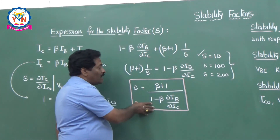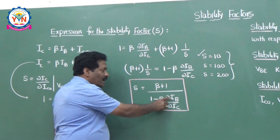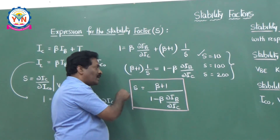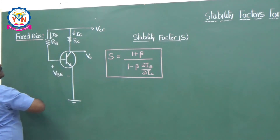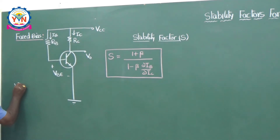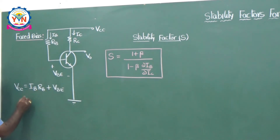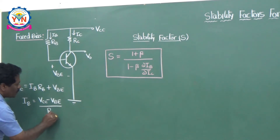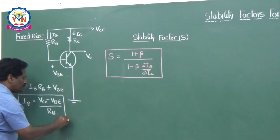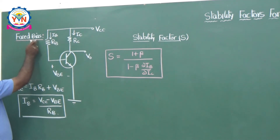This is the generalized expression. Now I would like to calculate the stability factor for different biasing circuits, starting with the fixed bias circuit — calculating S, S', and S''. For the fixed bias circuit, writing KVL for the input loop: VCC = IB·RB + VBE. From this, IB = (VCC − VBE)/RB. Since VCC, VBE, and RB are all fixed, IB is also fixed — that is why it is called the fixed bias circuit.